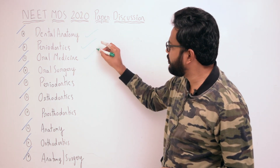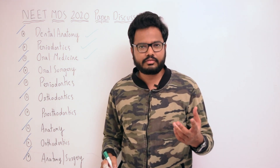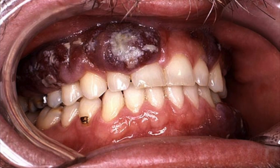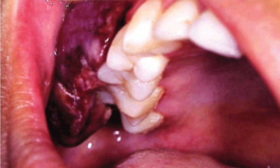The next question from oral medicine is a clinical-based question. As you can see, it is Kaposi's sarcoma. Oral involvement in this disease is quite unusual, but when it occurs it does so as soft bluish nodules of palatal mucosa or gingiva. Kaposi's sarcoma is a multicentric proliferation of vascular and spindle cell components, first described by Hungarian dermatologist Kaposi in 1872.